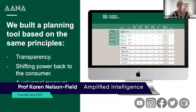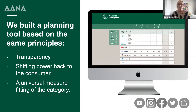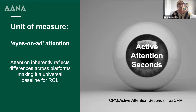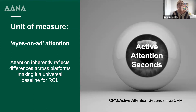We made a decision to build a planning tool based on transparency, shifting the power back to the consumer and making sure that there's a universal measure fitting of the category. After much work, we know that eyes on — or active attention — is the most valuable measure against human behavior and business outcomes. So we made a decision that active attention seconds was going to be our measure that fits the category.